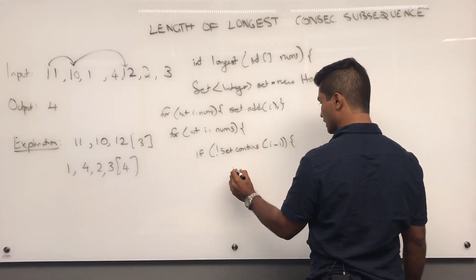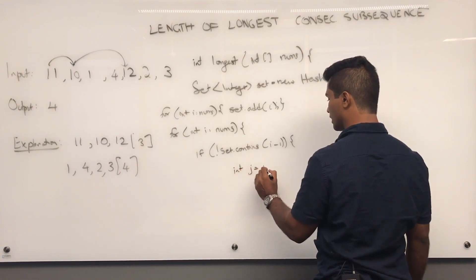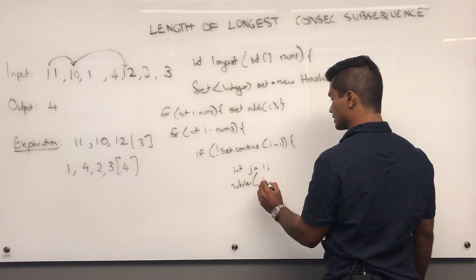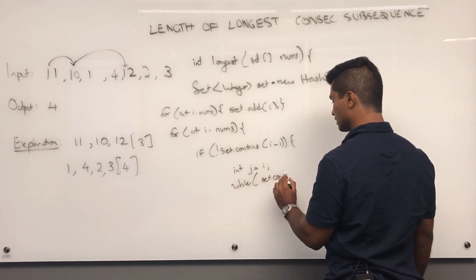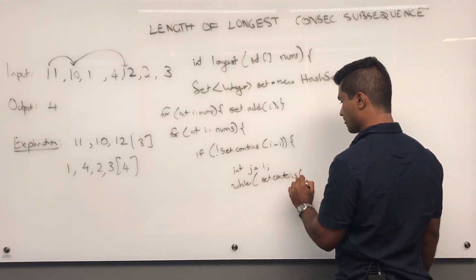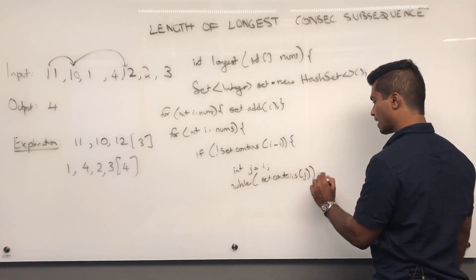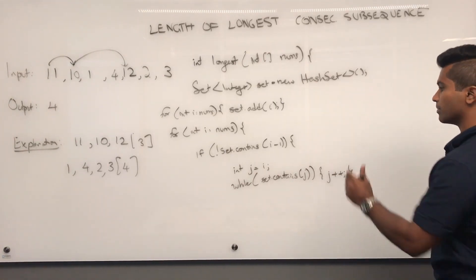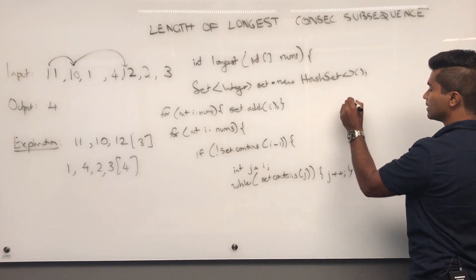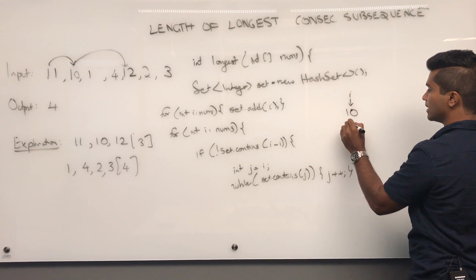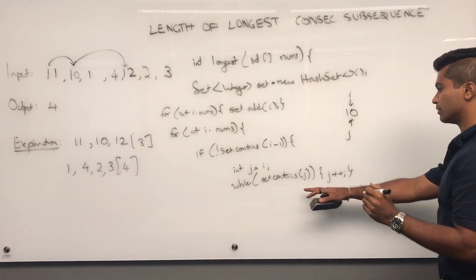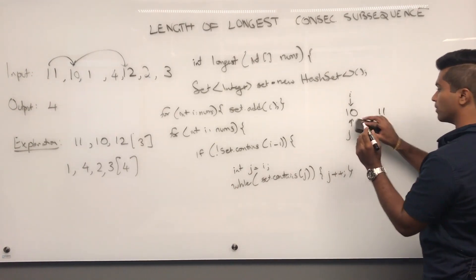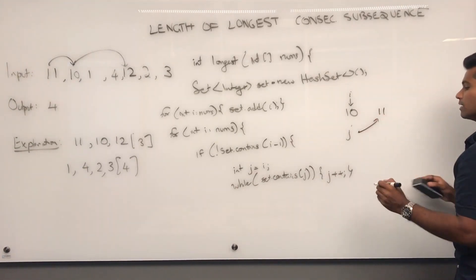So, we'll say int j is equal to i. And this is a while loop. So, let's see what happens when 10 is the one happening. So, initially, 10 is going to be i. And 10 is going to be j. Now, j plus plus, it becomes 11. So, j goes here. Then, it contains 11.